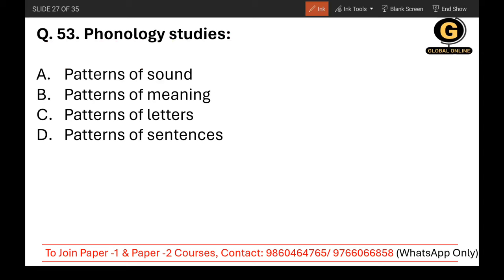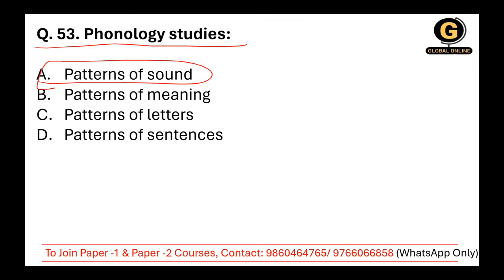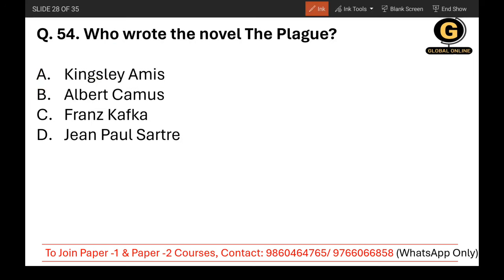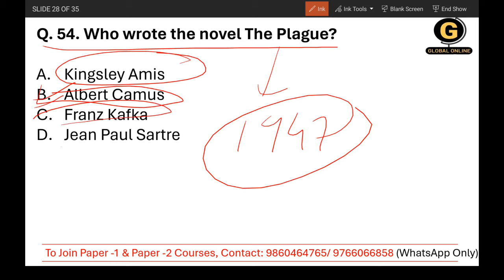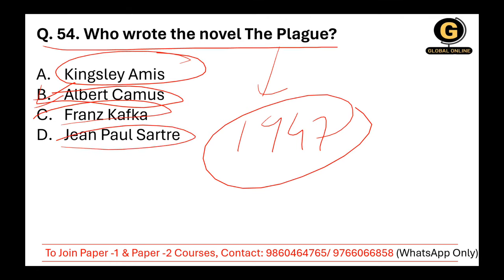Question 53: Phonology studies patterns of sound — that is all you need to know. Question 54: Who wrote the novel The Plague? It is an absurdist novel from 1947, and the writer is Albert Camus. Remember the works of Albert Camus, Franz Kafka, and Jean-Paul Sartre.